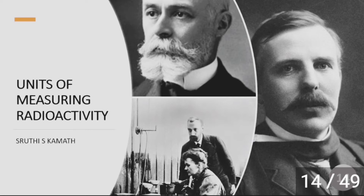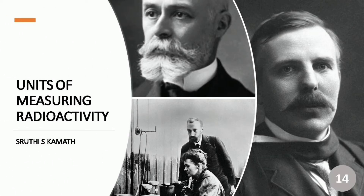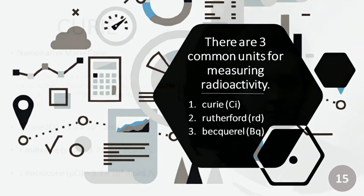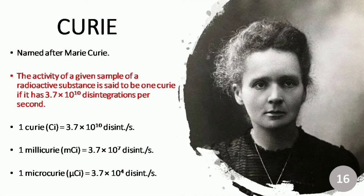Now the next topic is units of measuring radioactivity. My name is Shruti S. Kamath. There are three common units for measuring radioactivity: curie, rutherford, and becquerel. Firstly, curie — it is named after Marie Curie. The activity of a given sample of radioactive substance is said to be one curie at 3.7 × 10^10 disintegrations per second. Disintegrations per second means the disintegrations happening to the atoms or molecules in the given sample.